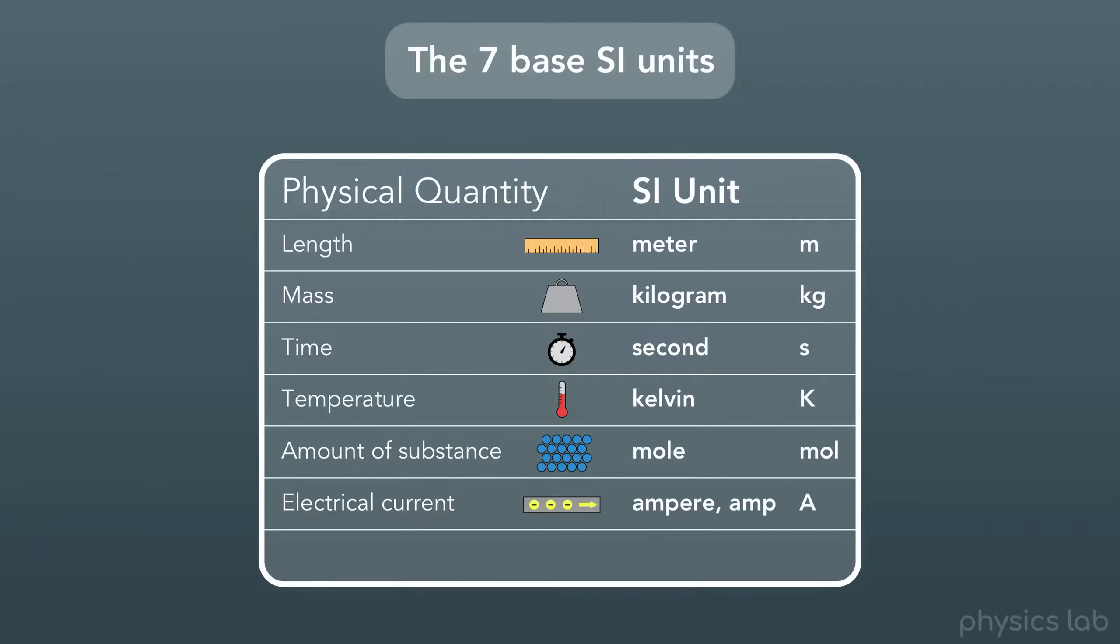For electrical current, we use amperes, commonly referred to as amps, also abbreviated as capital A. And for light intensity, we use candelas, abbreviated CD.